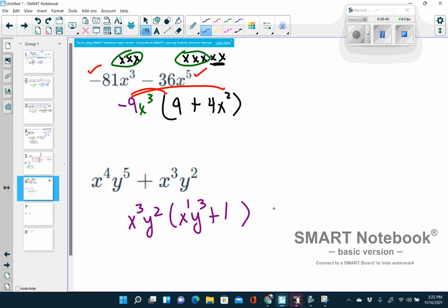And then I can distribute to check. Since I want to write this better, I don't need to put that little 1 right there. So final answer is x cubed y squared, parentheses, x, y to the third plus 1. That plus 1 has to be there. Otherwise, it is not correct. All right, moving on.